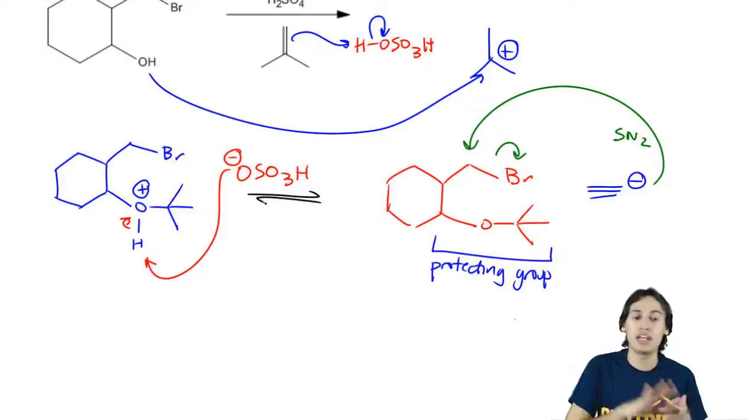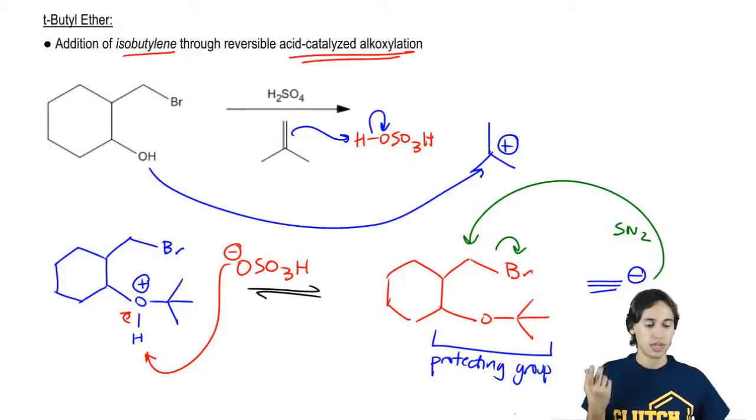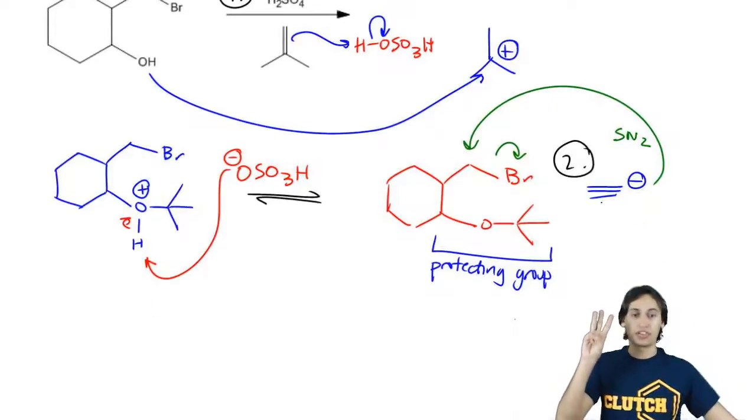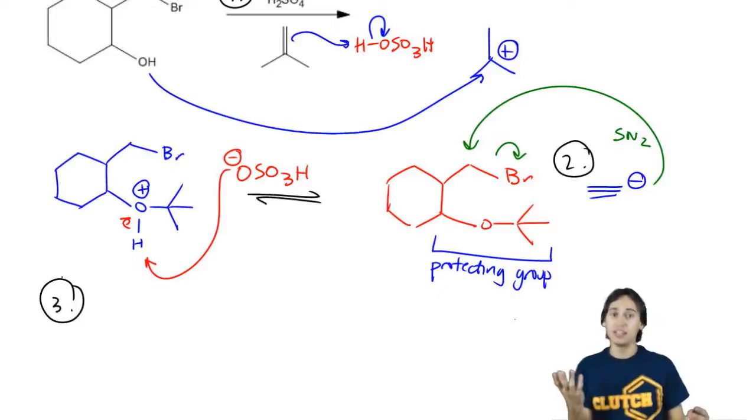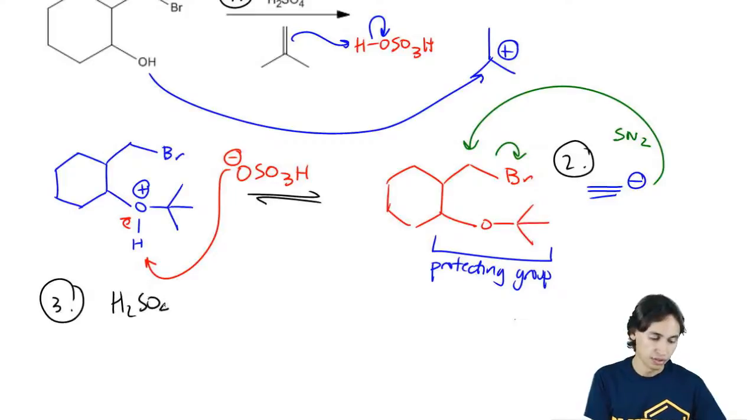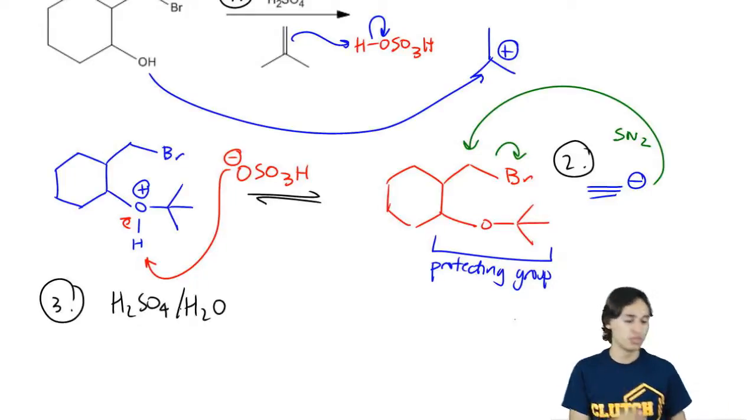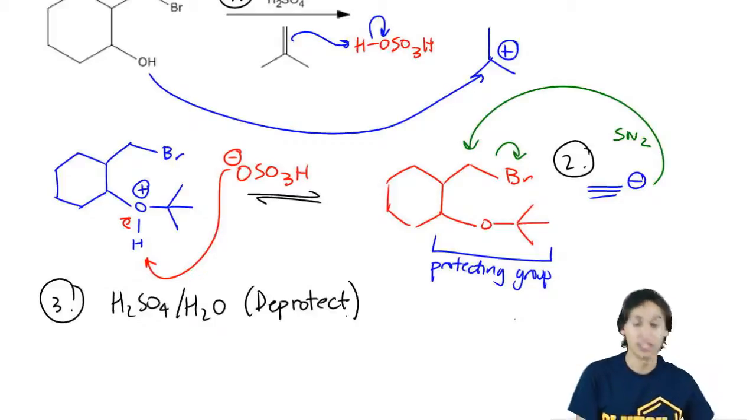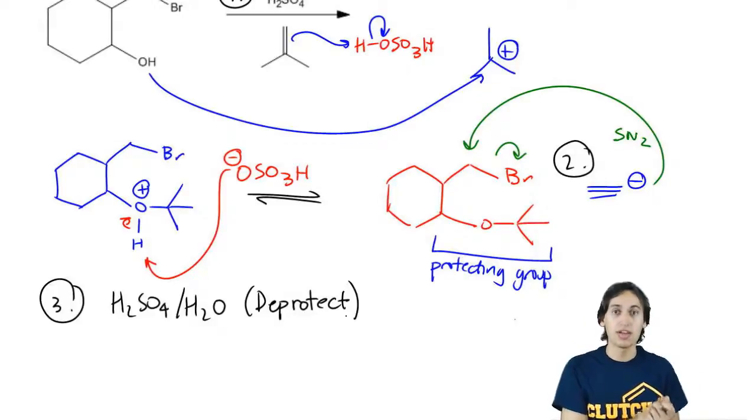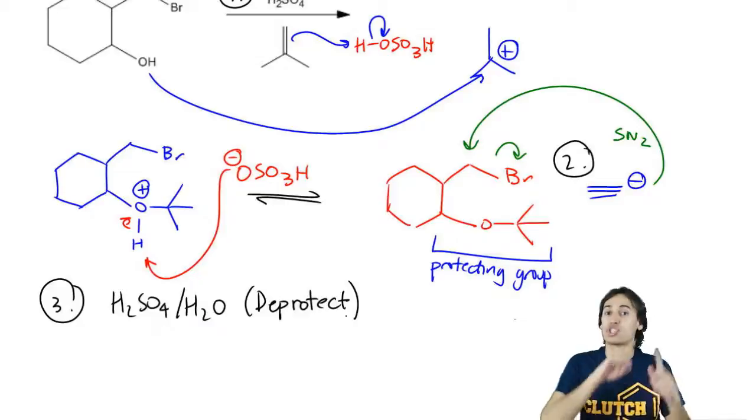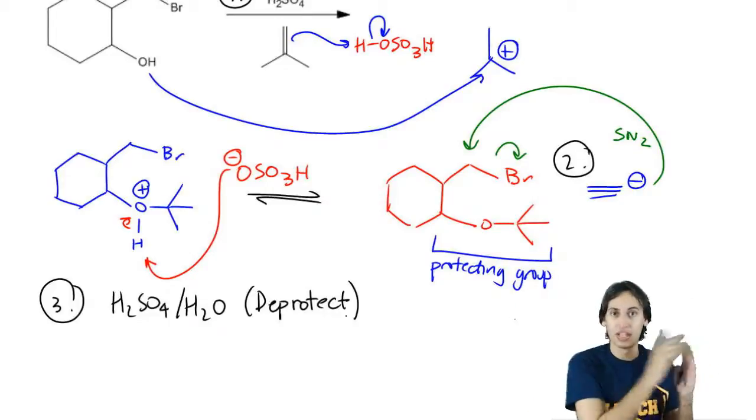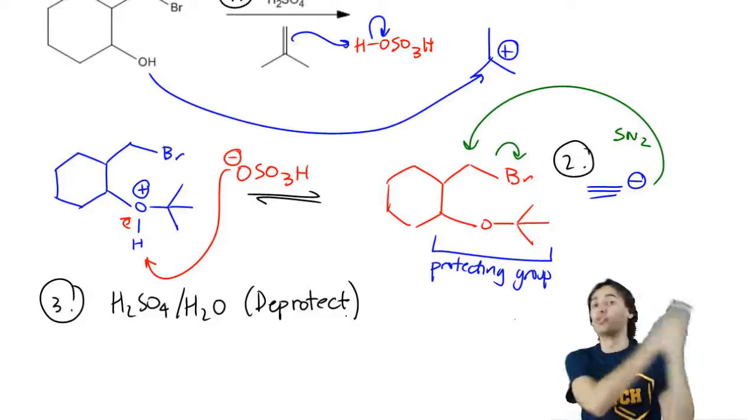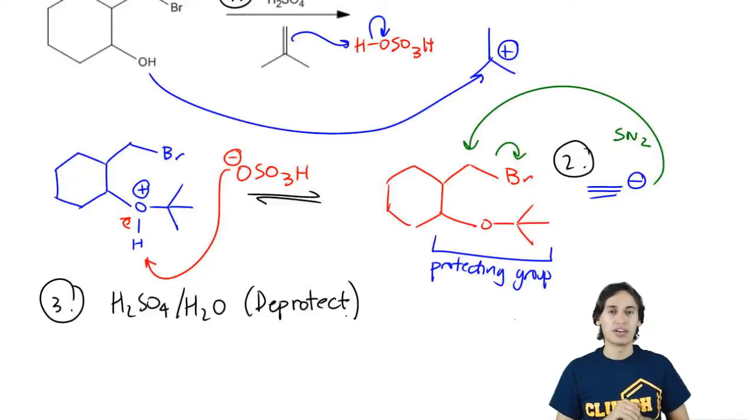So after we do this step, how do we get it back to the original alcohol? Well, if adding our protecting group was step one and if adding our alkaline was step two, then we have a third step and the third step is just to add mild acid. So I could just say H2SO4 and water and what that's going to do is that's going to deprotect. Whenever you protect, you always have to deprotect. What does deprotect mean? It just means that I'm going to take that ether completely off. Now I'm not going to show you the whole mechanism to deprotect, but you can imagine it's just the reverse mechanism of everything we've drawn to protect it. So what that means is that I would actually protonate the O first, then it would leave and then it would get protonated.